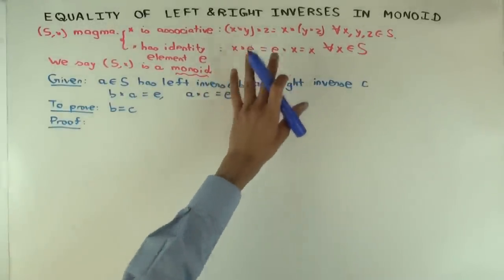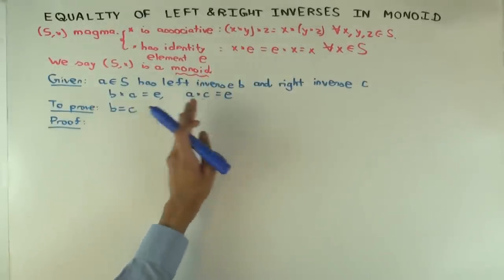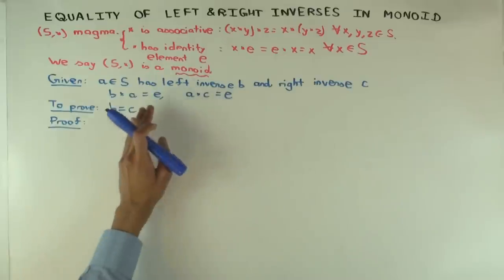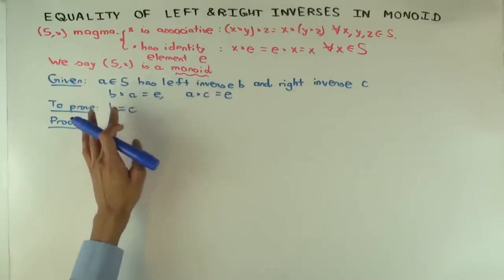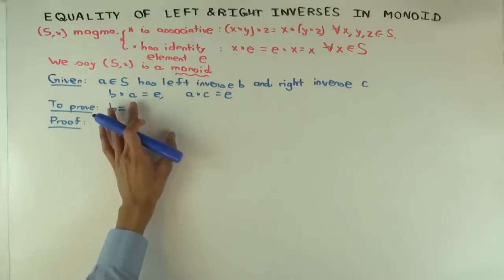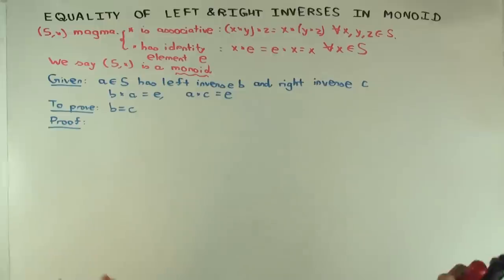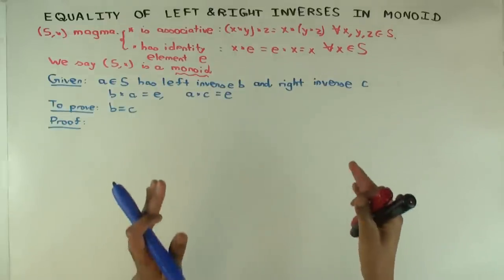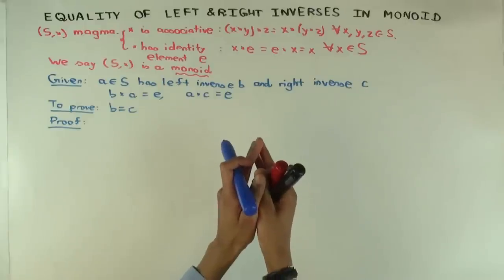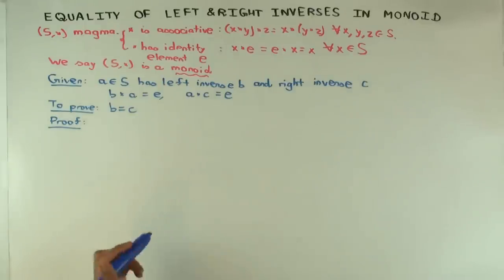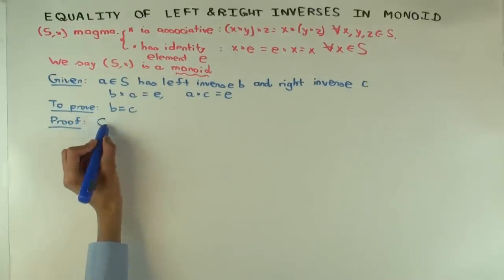We want to use associativity. We want to pit B against C, but we want to use A as well, right? So we want to put A in the middle. B and C are trying to interact with each other, but A is in between. And we want to use associativity. So what product should we consider?